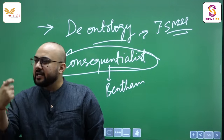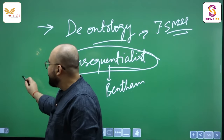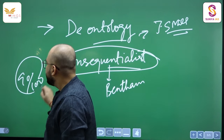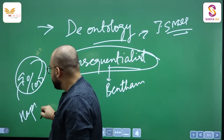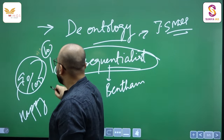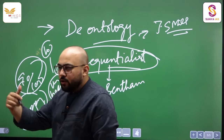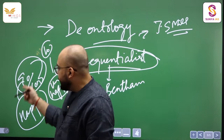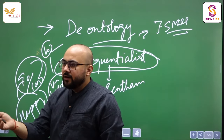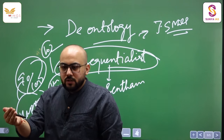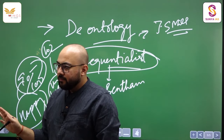When Bentham says 'greatest happiness of the greatest number,' if you are achieving happiness for 90 out of 100 people, then those 90 are happy and 10 are not. From the deontology aspect, this is unfair because at least 10 people have suffered. But from the consequentialist school of thought, this is quite fair because the majority of people have been happy.